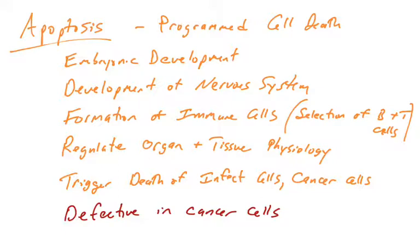And interestingly, apoptosis is defective in many cancer cells. Cancer cells have a really hard time triggering apoptosis — they become resistant to it, and that is what allows them to survive in the body.